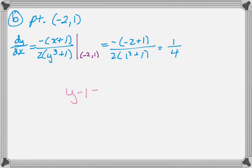So y minus 1 equals 1/4 times the quantity x plus 2. There you go.